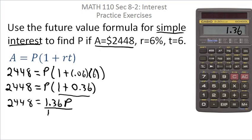To solve for P, divide both sides by 1.36. In the calculator, enter 2448 divided by 1.36 equals. That gives me 1800.